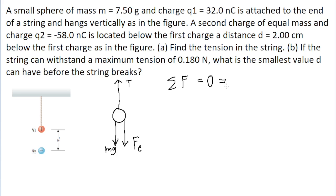So our net force must be equal to the sum of these forces. Let's sum together these forces as vectors, assuming a typical coordinate system where the up direction is positive. This means that the tension force is positive, and we subtract the force from the weight and the electrostatic force from particle two. So zero is equal to T, the tension force, minus Mg, minus F sub E. The tension T is what we're looking to solve for.